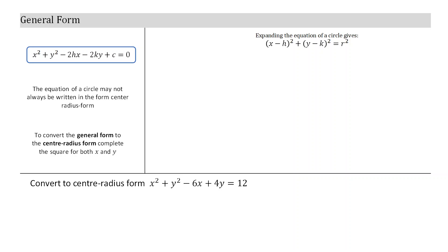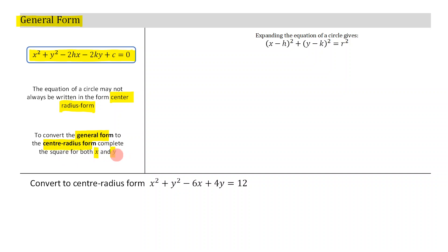Welcome. In this part of the lesson, we're going to be talking about the general form of a circle. This is the general form of a circle. The equation of a circle may not always be written in the center-radius form — it could also be written as the general form. To convert the general form to the center-radius form, you need to complete the square for both x and y.